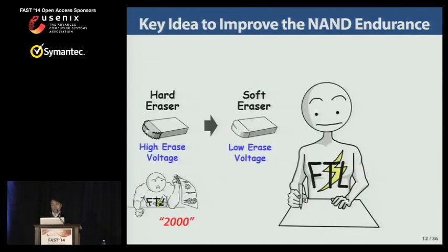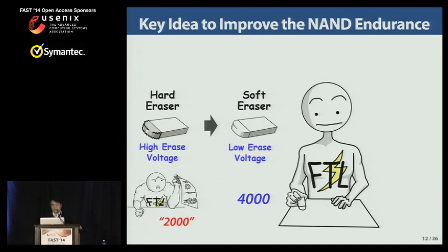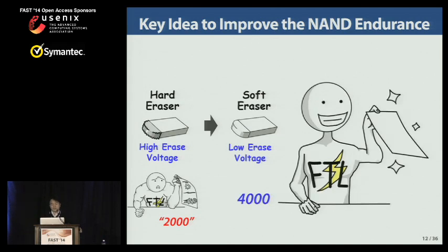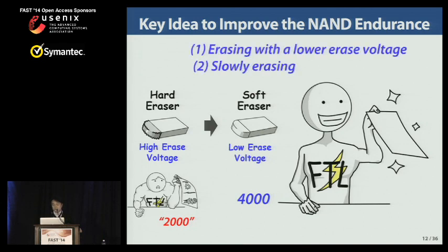I present the key idea to improve NAND endurance using FlashMan. FlashMan learns a good lesson. He relaxes his arm, and holds a soft eraser instead of a hard eraser. He also repeats writing and erasing with a soft eraser very slowly. Fortunately, FlashMan can write and erase 4,000 times. To use NAND flash memory for a long time, we should slowly erase NAND cells with a lower erase voltage as long as possible.